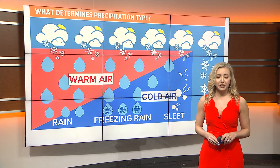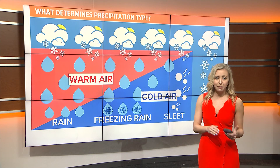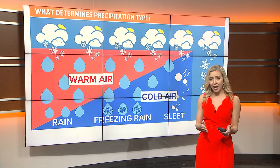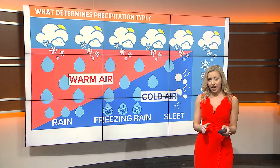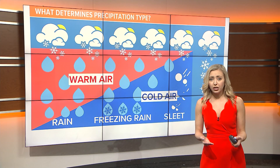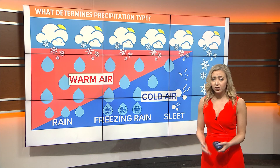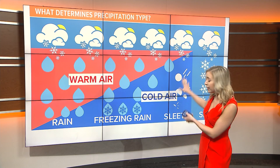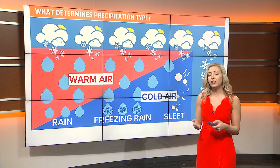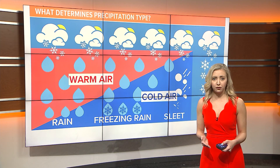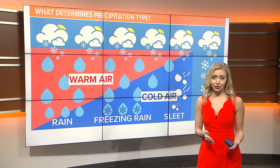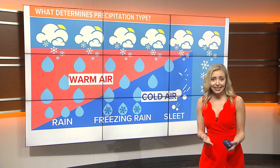Much of the determination is due to different temperatures in various layers of the atmosphere. Clouds high up in the atmosphere tend to be very cold, and as precipitation falls down to earth it can encounter warm and cold layers of air. If it only encounters temperatures above freezing — that would be greater than 32 degrees — it would fall as rain.